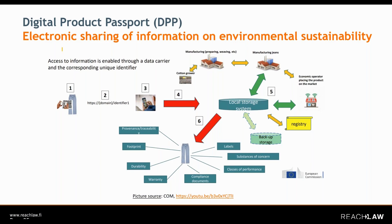The Digital Product Passport is basically the new system under ESPR for the electronic sharing of information on environmental sustainability, in order to promote the idea of the circular economy and also the idea of a digital economy. In the future, it will relate to a specific physical product, and access to the information will be enabled through a data carrier and a corresponding unique identifier.